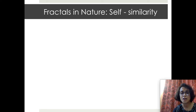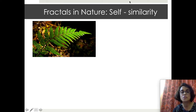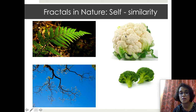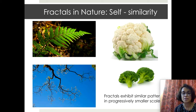Fractals in nature occur abundantly and they exhibit a very interesting property known as self-similarity. This is a picture of a fern leaf — the leaf has a central branch along which there are smaller leaves, which also have central branches along which there are yet smaller leaves. If you take a small portion of this leaf and magnify it, you will see that it actually resembles the whole leaf. Similarly, a single tree branch splits into sub-branches that resemble the bigger branch, and vegetables such as broccoli or cauliflower show the same property. Fractals exhibit self-similar patterns in progressively smaller scales, and nature is full of such fractals.